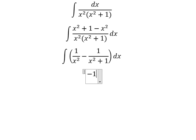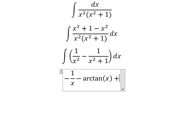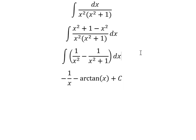negative one over x. The integral of the second term gives us arctan of x, and we add the constant c. This is the end, thank you for watching.